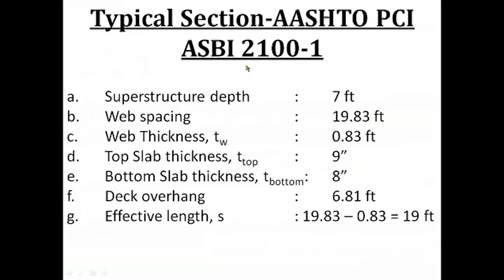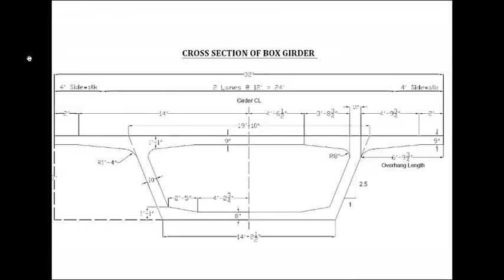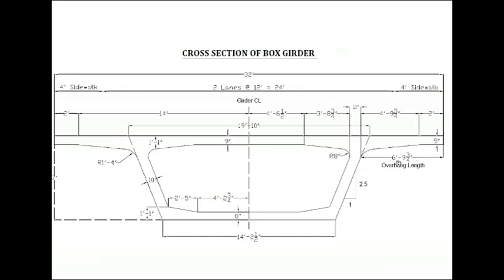This is the typical section of AASHTO PCI / American Segmental Bridge Institute 2100. The typical cross-section has a width of 32 feet. The thickness of the deck is 9 inches, thickness of the bottom slab is 8 inches, and the thickness of the web is 10 inches. The overhang length is 6 feet 9.75 inches. Other dimensions are shown on the screen.